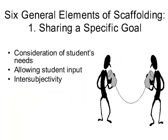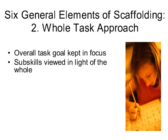Taking each element in sequence: sharing a specific goal requires consideration of the student's needs, understanding what they're trying to accomplish, and allowing student input. This is probably one of the most complex parts of scaffolding — the mutual understanding that needs to occur between the scaffolding provider and the learner. For the whole task approach, the overall goal must be kept in focus and sub-skills viewed in light of the whole. There are moments where you might stop to teach a specific skill — grammar or a mathematical skill — but it's done in the context of the whole task.